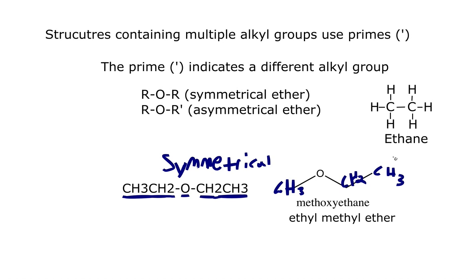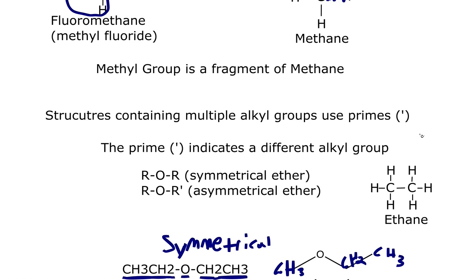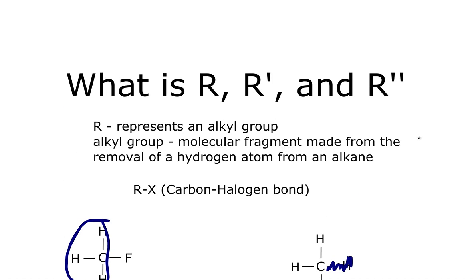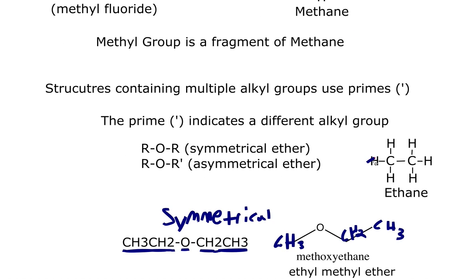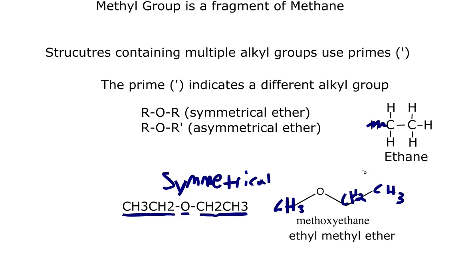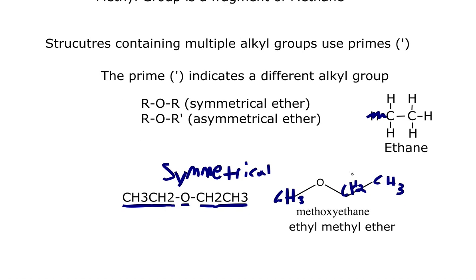So how do we get that ethyl group? Let's look at our alkane. Following the definition for alkyl groups — a molecular fragment made from the removal of a hydrogen atom from an alkane — we go to ethane and remove a hydrogen atom. Now we can see we have CH2-CH3, which is our R. That is what is meant by the R symbol in organic molecules. If we had an R double prime, that would mean we have three different alkyl groups that are not the same.